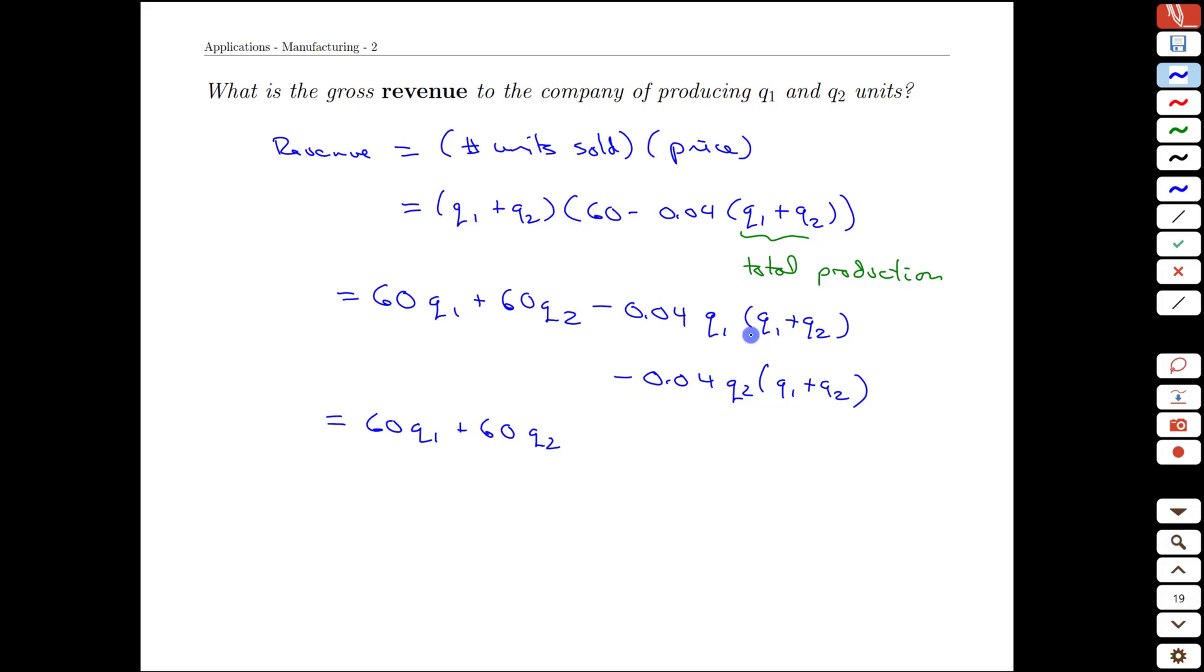We're going to do one last expansion because we'll be able to merge some terms here. We have negative 0.04 q1 q2 and we have another negative 0.04 q2 q1 while those are the same. So we'll have 0.08 q1 q2s and then we'll have q1 squared with a 0.04 and a 0.04 q2 squared, and that describes the full revenue for this company.